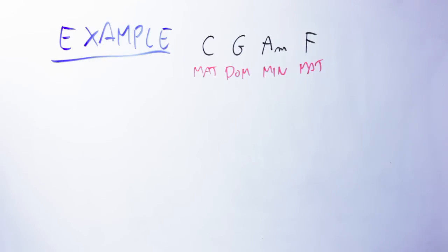The next chord, A minor, it's a minor chord, and the last chord, F, it's a major chord. Fantastic! So let's see what suspended chord we have to play on top.